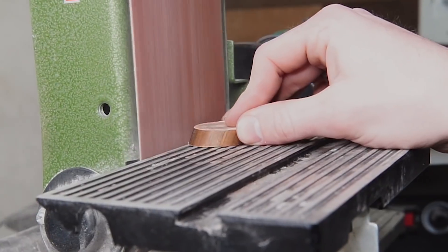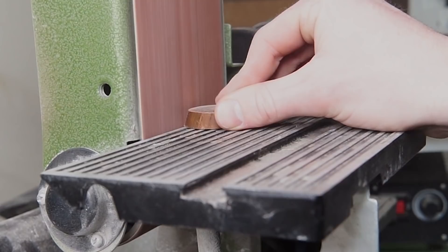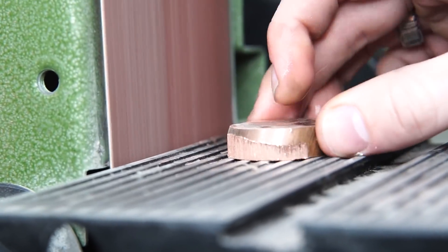Because I cut it at an angle, it's got this kind of oblong shape to it, so I'm going to quickly go over to my belt sander, round this off, and then it's going to be ready to throw into the lathe.